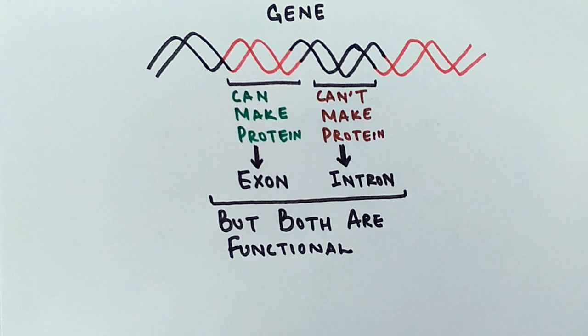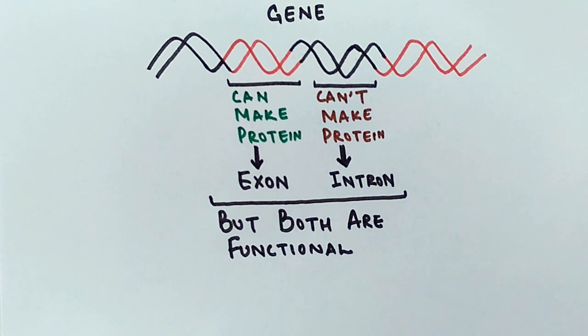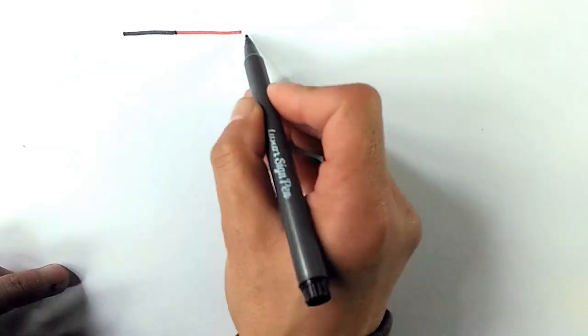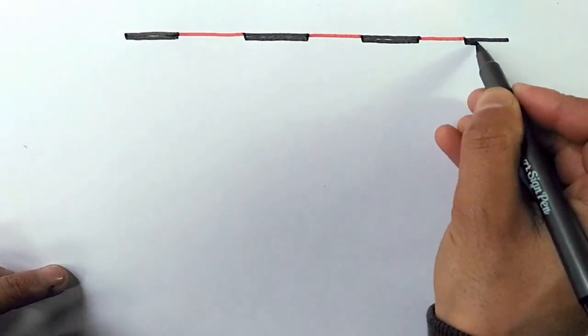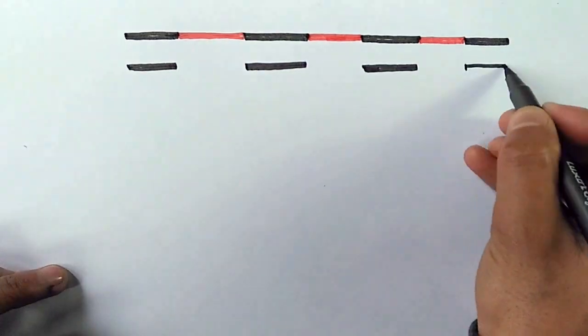But both are functional, it must be noted here both are functional. An exon can make a protein, but an intron cannot make a protein, but it can make other RNAs that are called non-coding RNAs, tRNA, rRNAs, tiRNA and other non-coding RNAs that cannot make a protein but they are functional, like we have X inactivation by this intron in case of females. In order to make a protein, these exons are retained and introns are spliced away.